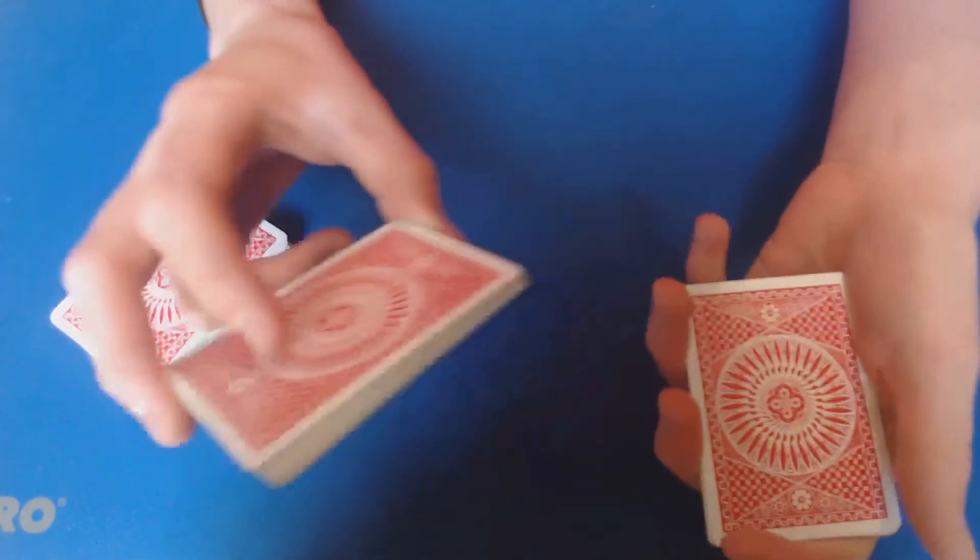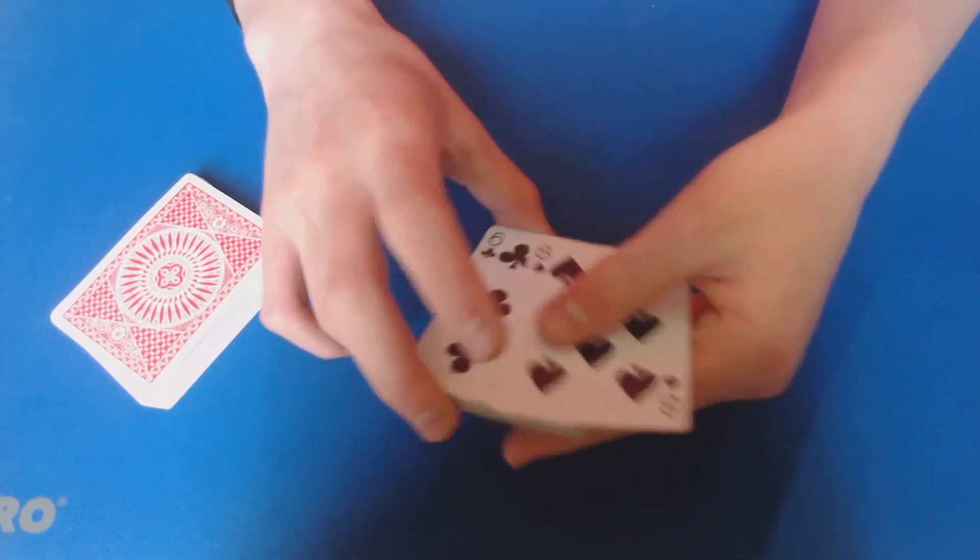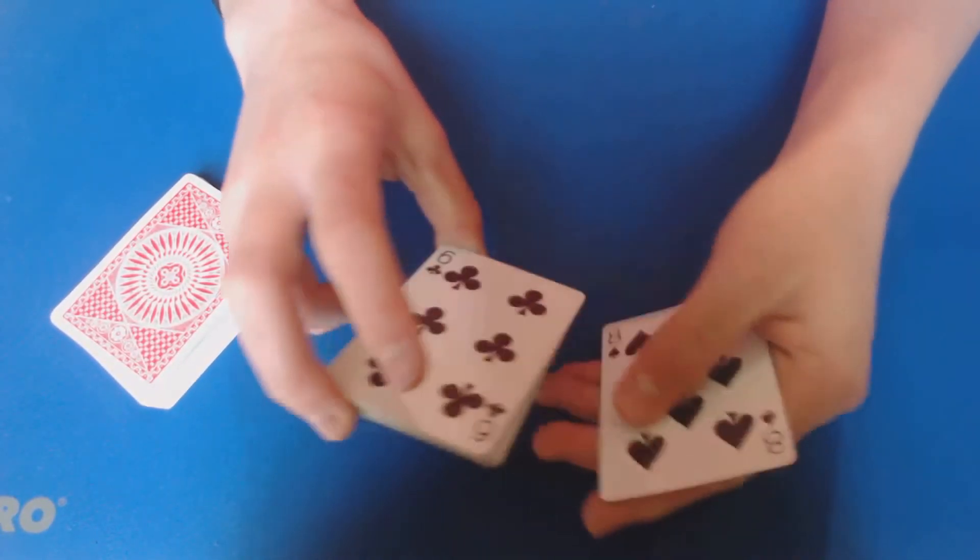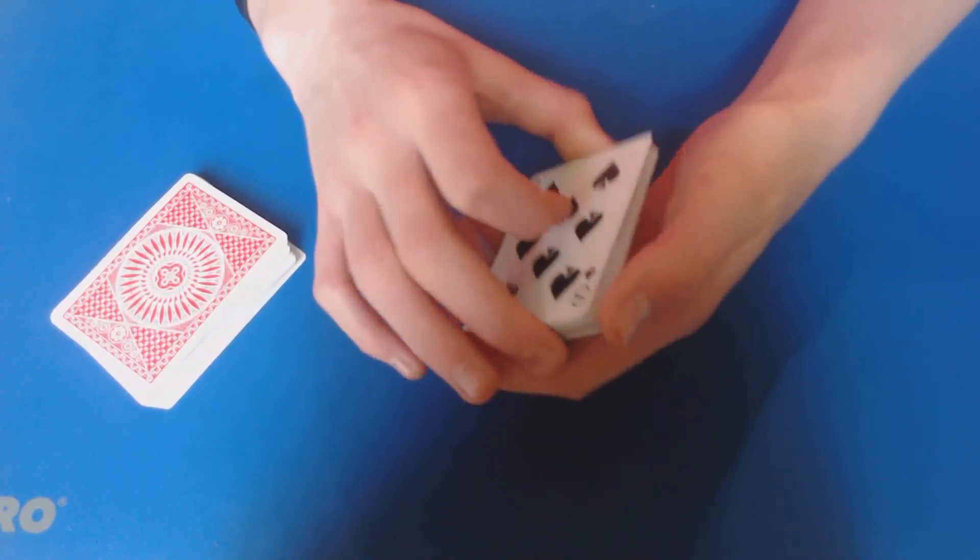And you're going to reverse the order of the top five cards, so one, two, three, four, five. I just reversed the order, which means that their card is now going to be here, right? So go ahead, pull off the eight of spades.